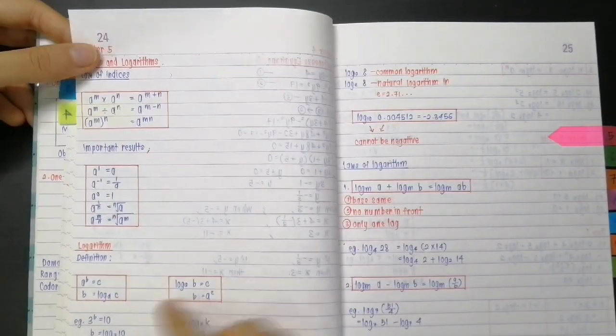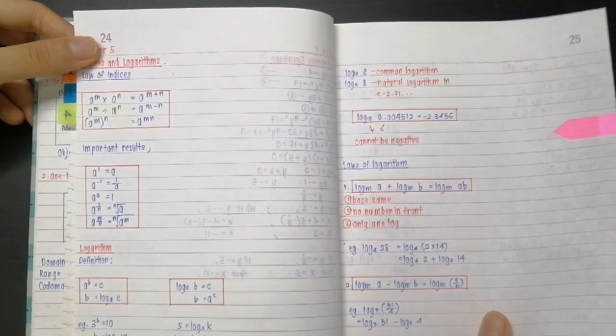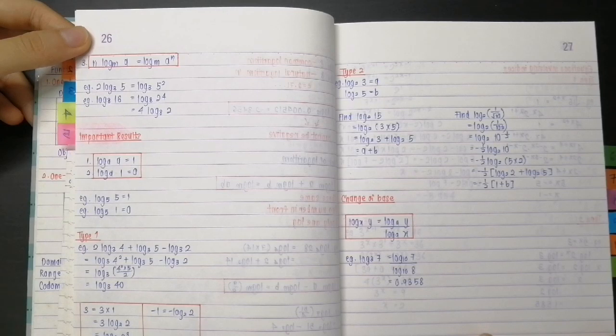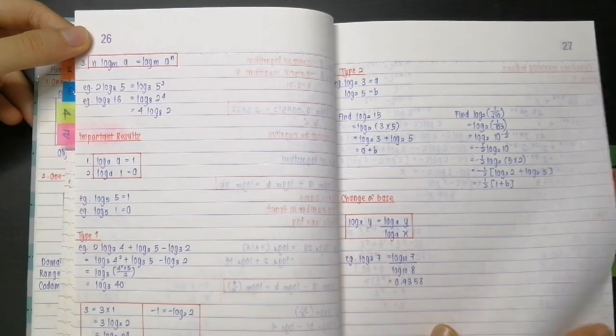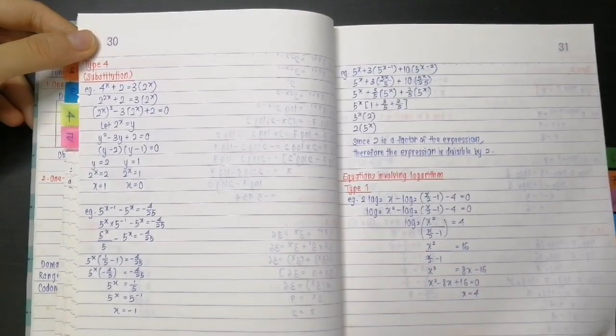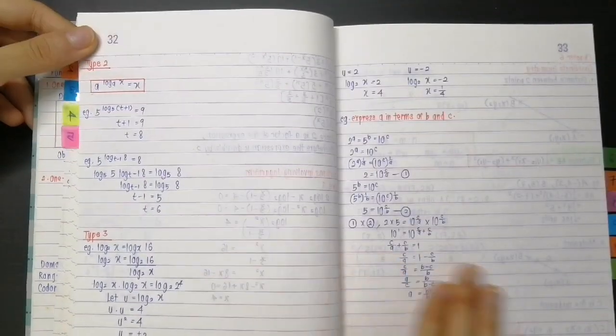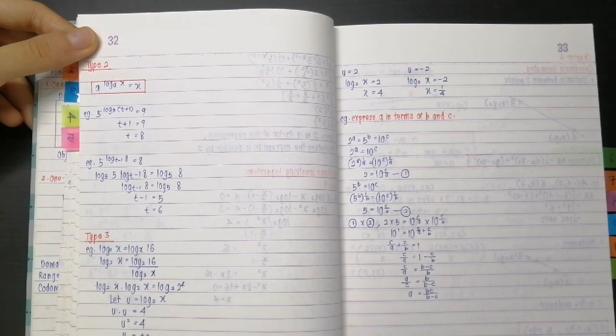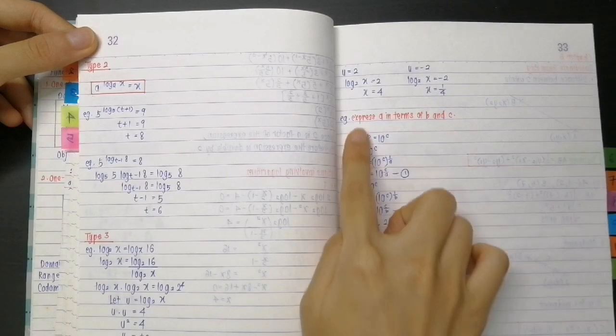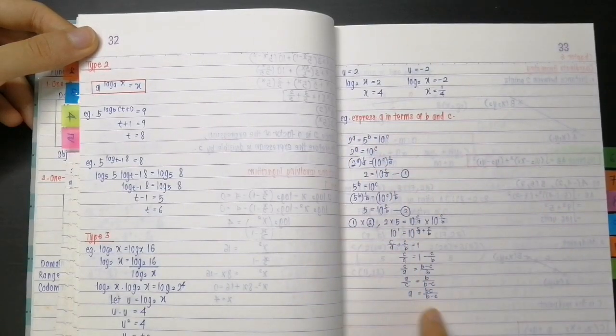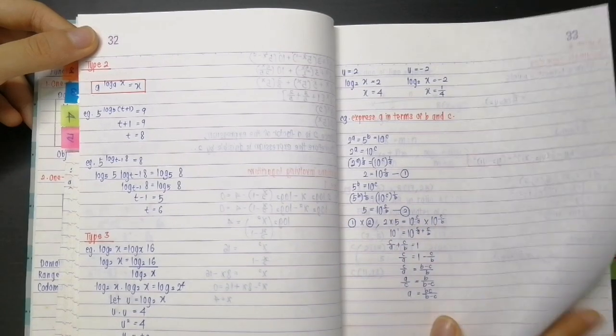Indices and logarithms. And then we have some of the important results that we have to know. And some type of questions as well. Some type of questions might be for example 'express a in terms of b and c,' and I have an example showing how to do it and I've numbered the steps as well.